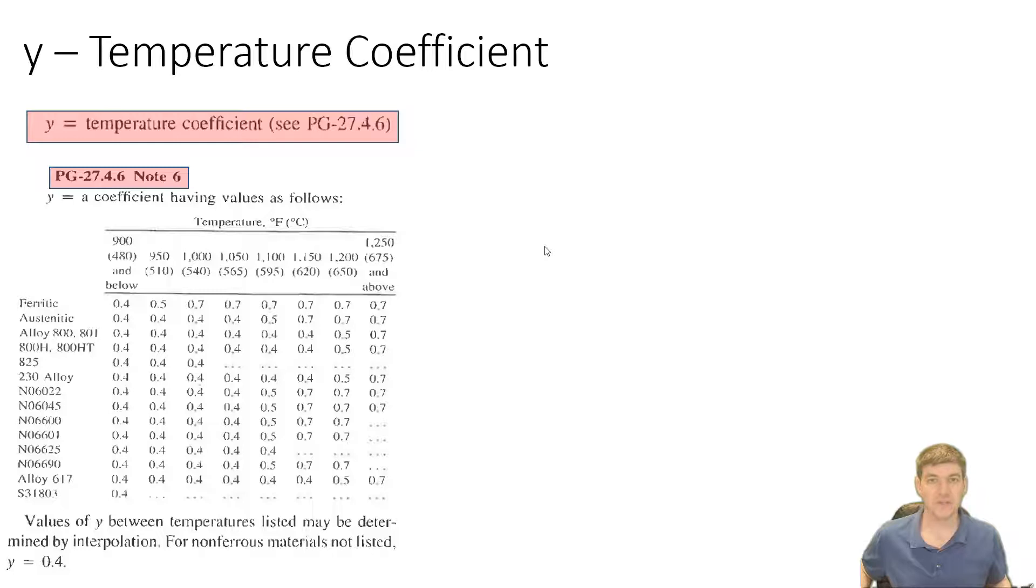So some of the factors we don't know. One of them is Y, the temperature coefficient. So this is new to us. We didn't have that back in tubing. And if we look at the list, Y is defined as the temperature coefficient, and take a look at 27.4.6. And if we go to 27.4.6, we're going to find this table. And this table lists out a number of materials, and it also lists out a number of temperatures. And if we look at the temperatures, we can see that they're very high.